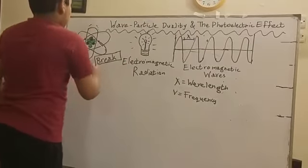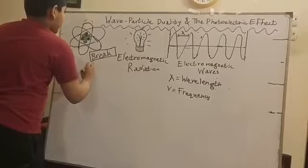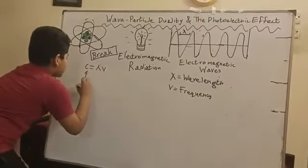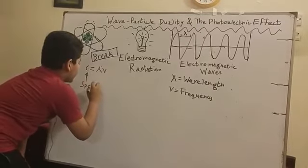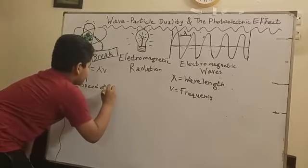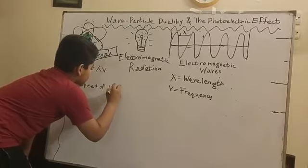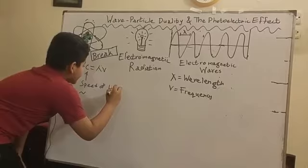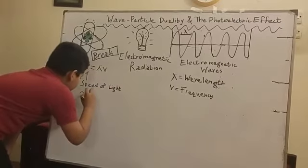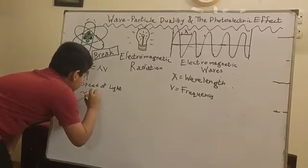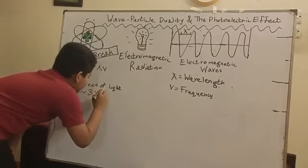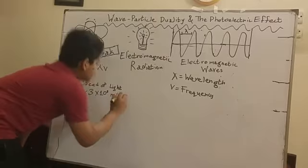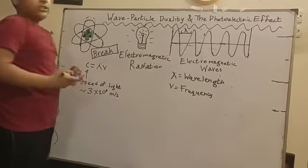Which is depicted by this equation where C is the speed of light, which is approximately—not exactly, remember that—approximately three million meters per second, the speed limit of the universe.